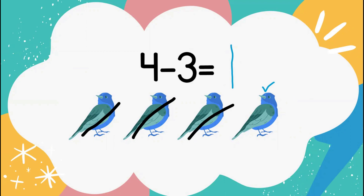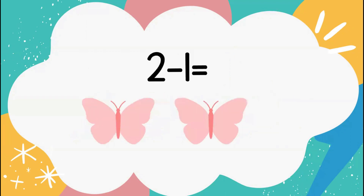Good job. Now let's take a look at our next subtraction problem. We have 2 minus 1 equals. I have 2 butterflies and I'm going to take away 1 butterfly. Students, how many butterflies do I have left? Good job — I have 1 butterfly left.